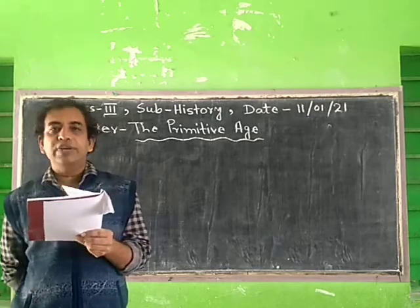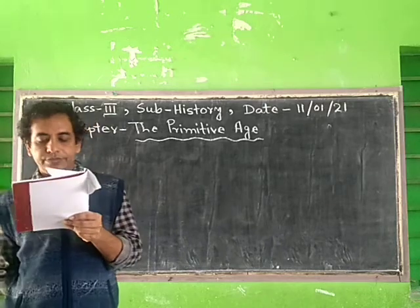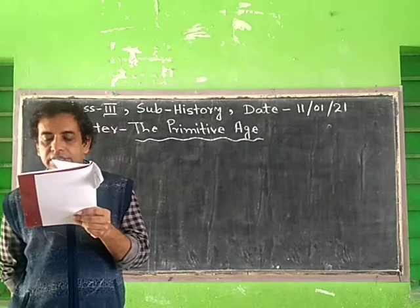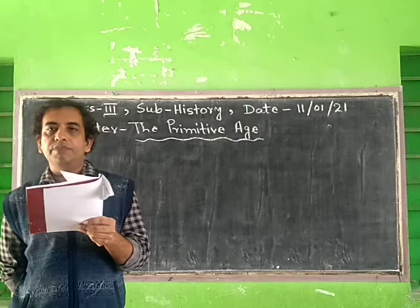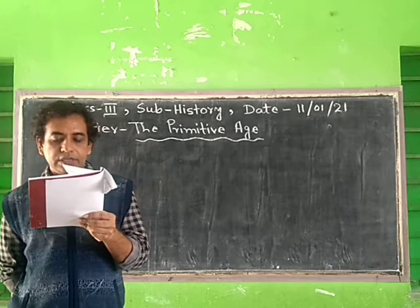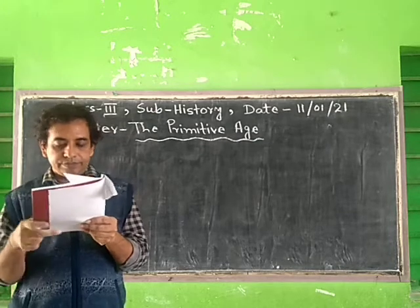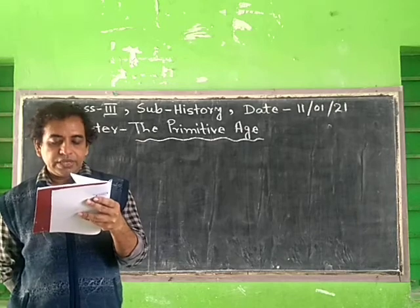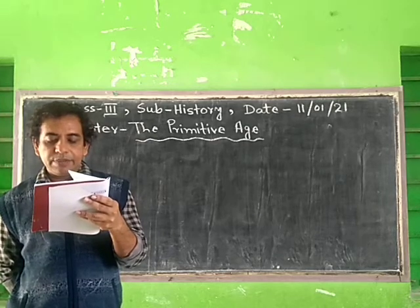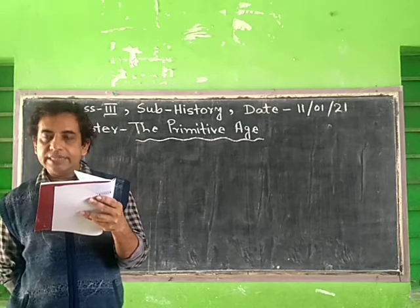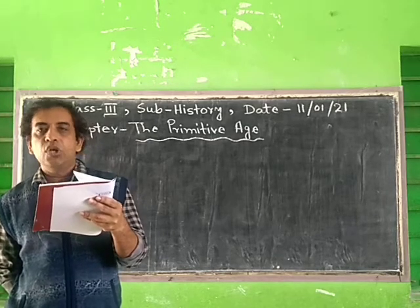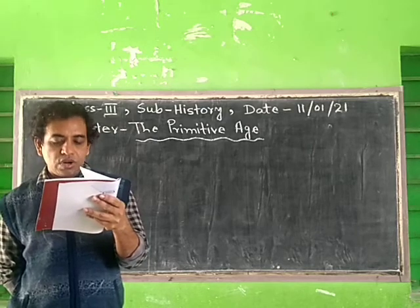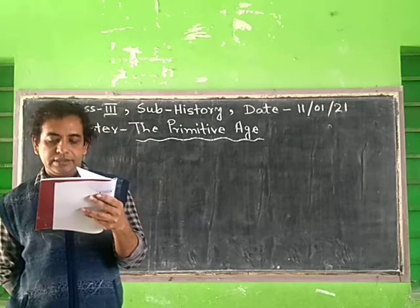Change went on. The earth gave birth to mammals. They were called Primates. They in turn gave birth to higher primates. Examples: gorillas, chimpanzees, orangutans, monkeys, etc.